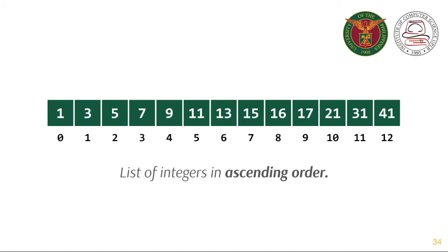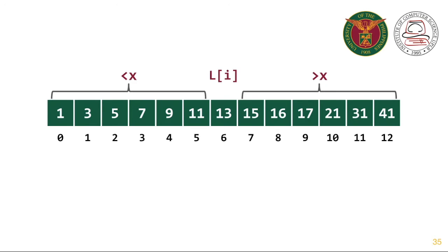We can further take advantage of the fact that the list is sorted. The next searching algorithm continuously divides the list into two until the value being searched for is found. This algorithm is called binary search.